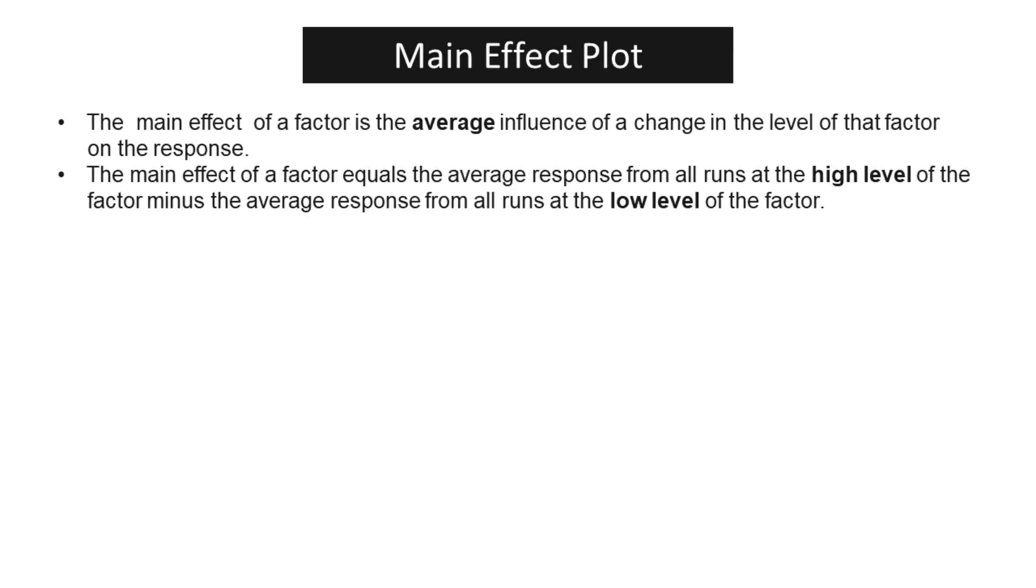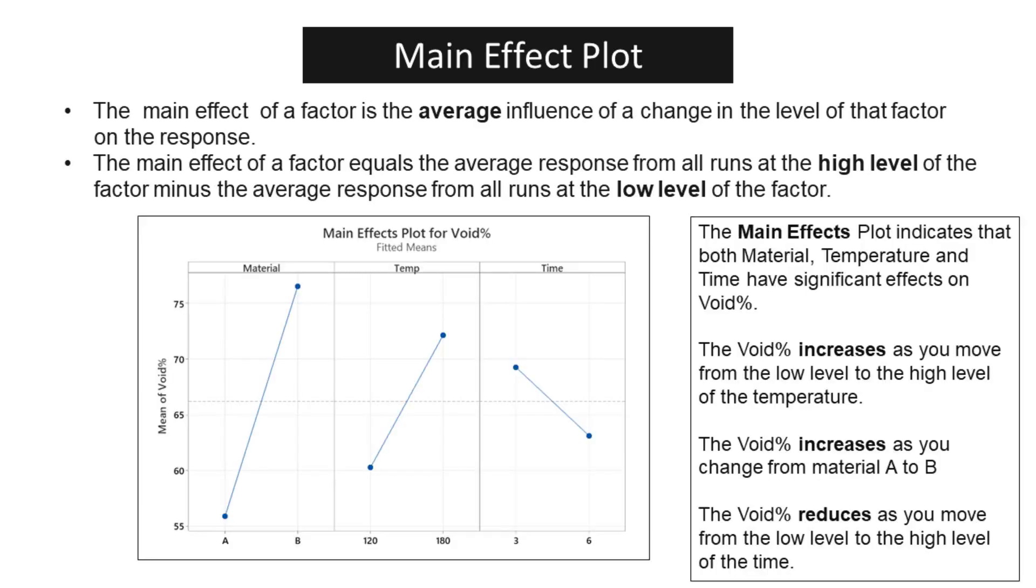The main effect of a factor is the average influence of a change in the level of that factor on the response. The main effects plot indicates that both material, temperature and time have significant effects on void percent. The void percent increases as you move from the low level to the high level of temperature. The void percent increases as you change from material A to B. The void percent reduces as you move from the low level to the high level of time.